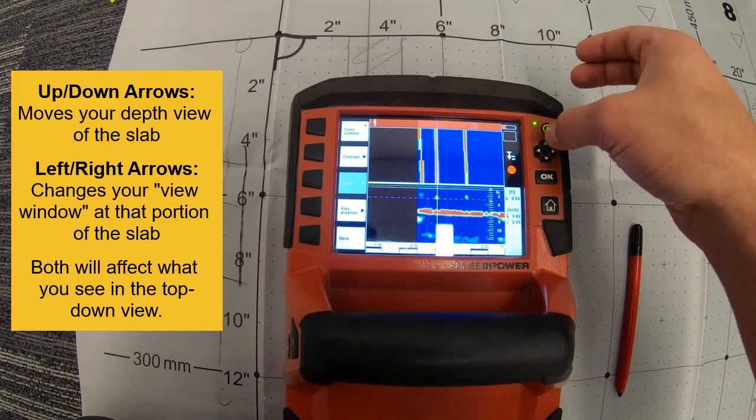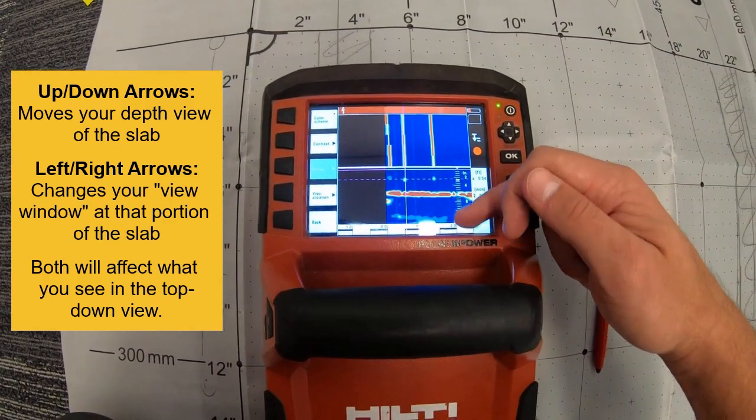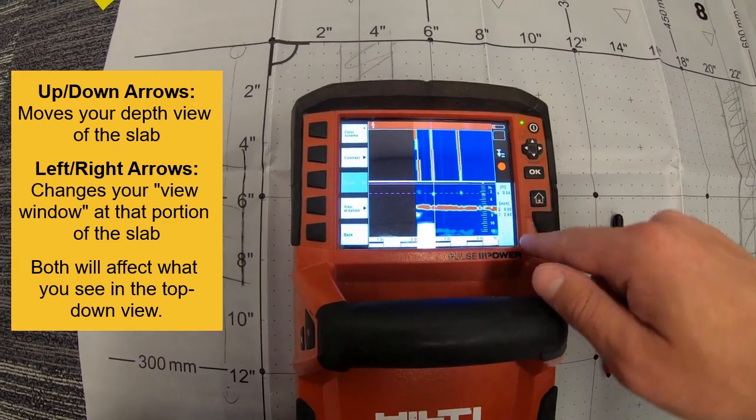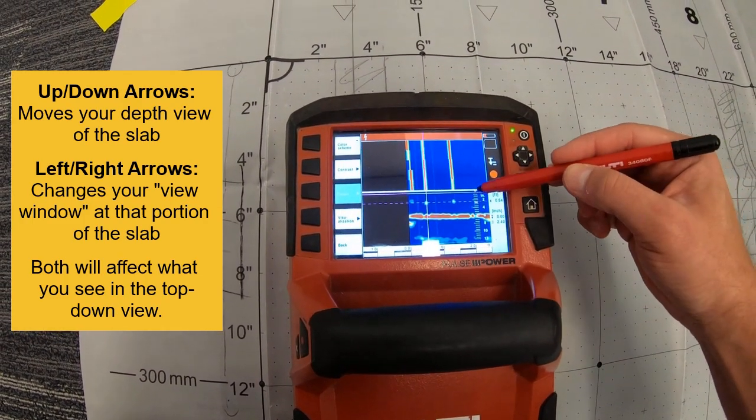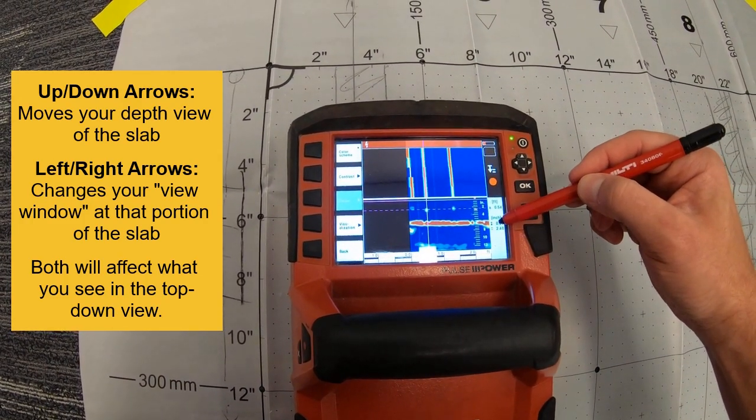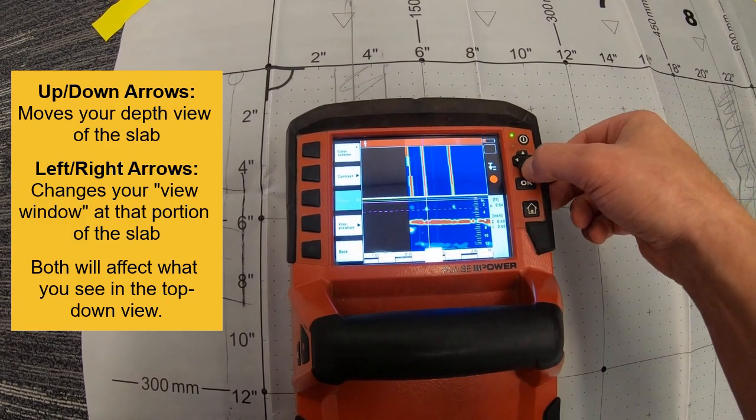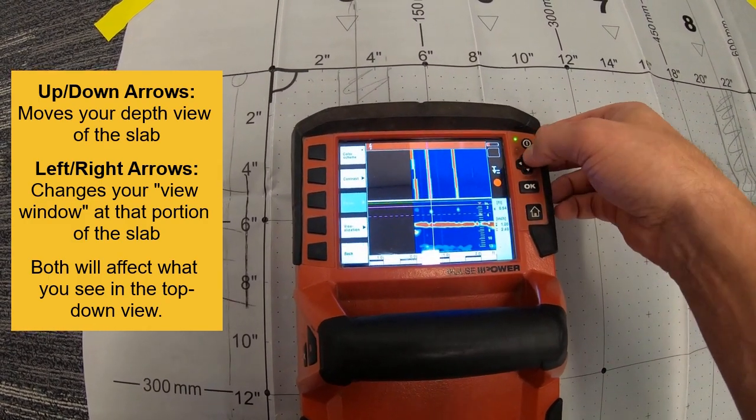On the right side is my depth gauge. And you can see here where this magenta line right here, it's saying that I'm at the 0-0 of my slab. So as I go down, it's showing you how deep you're going. Okay?